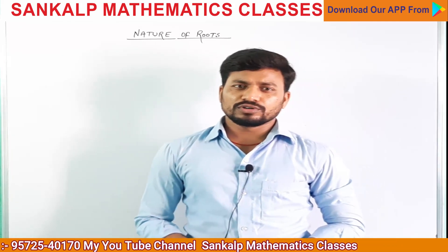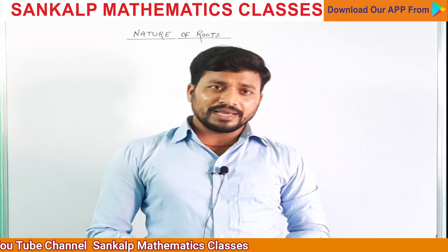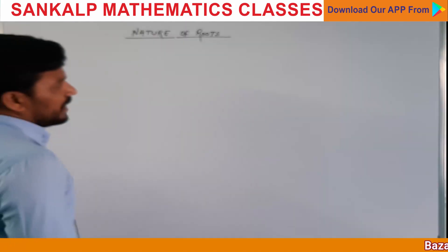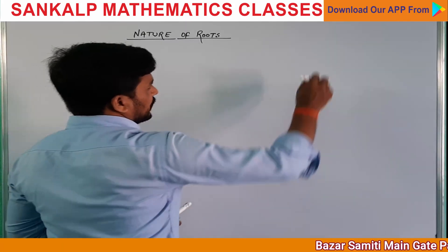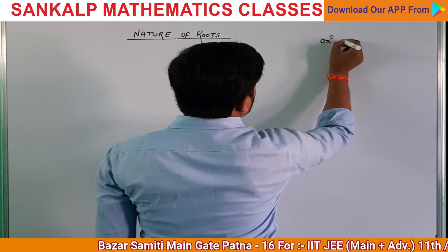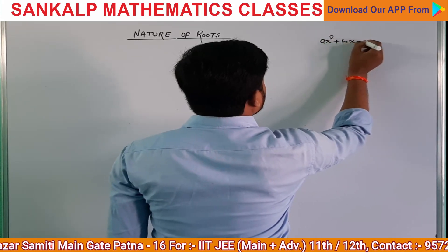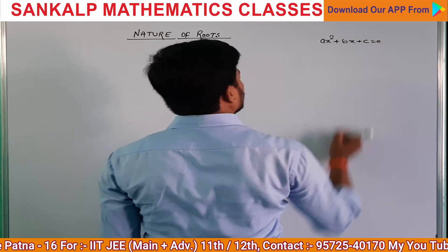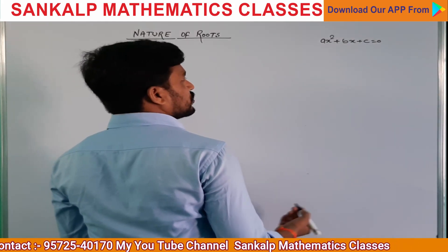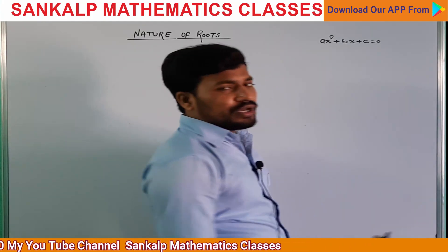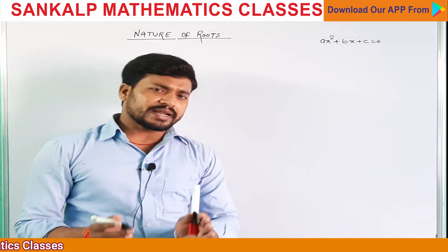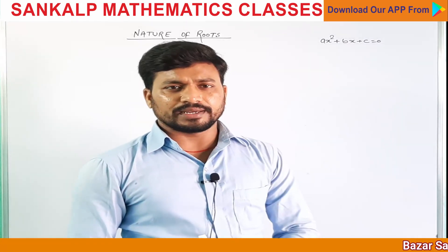तो यहाँ पर जो मेरी topic है — nature of roots। अगर मैं nature of roots की बात करूँ, तो मेरे पास एक equation है ax² + bx + c = 0। Quadratic equation की nature of roots depend करता है discriminant पर — D पर ही depend करता है, सारा खेल हम लोग D की ही करेंगे।